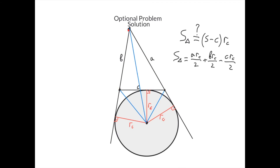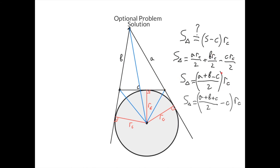Therefore, the area of the triangle equals this area plus this area minus this area. The area of the first sub-triangle is A·Rc divided by 2. The area of the second sub-triangle is B·Rc divided by 2. And the area of the triangle on side C is C·Rc divided by 2, which we subtract. So the area of the triangle equals (A·Rc)/2 + (B·Rc)/2 − (C·Rc)/2, which simplifies to ((A + B − C)/2)·Rc. Since (A + B + C)/2 is the semi-perimeter S, we have (A + B − C)/2 = S − C. Therefore, the area of the triangle equals (S − C)·Rc, as desired.